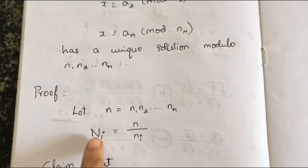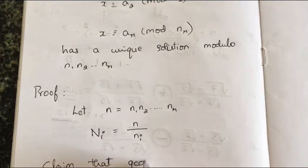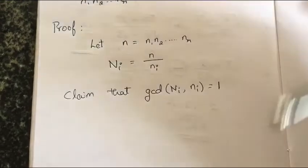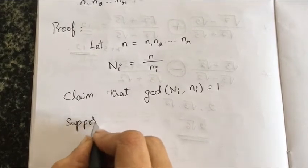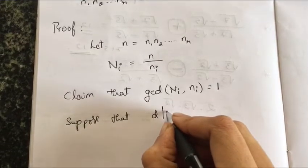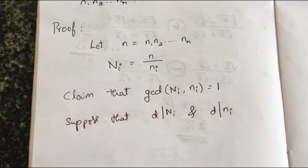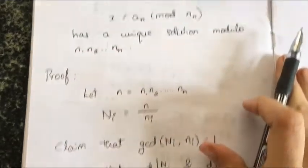Now I claim that gcd(N_i, n_i) = 1 — that is, capital N_i and small n_i are relatively prime. To see this, suppose they are not relatively prime. Then there must be a common divisor, say d, which divides both capital N_i and small n_i.